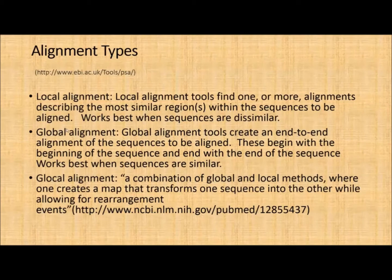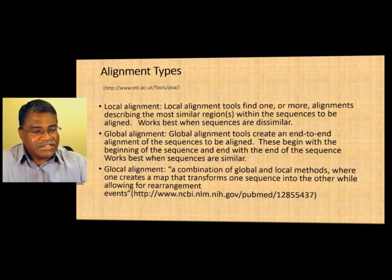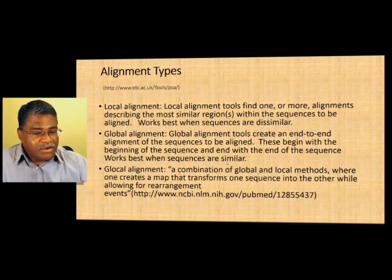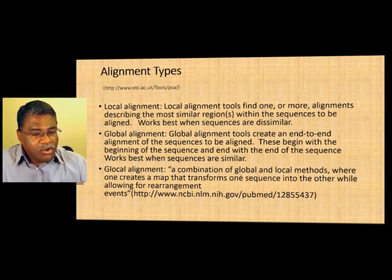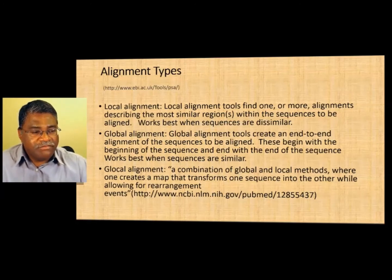A global alignment, on the other hand, is where you line sequences up end-to-end and put gaps in there — you're looking at the entire sequence in its entirety. But this works best when sequences are similar. Then you have a combination of global and local, called a glocal alignment, for sequences which fit the bill of both global and local similarities.